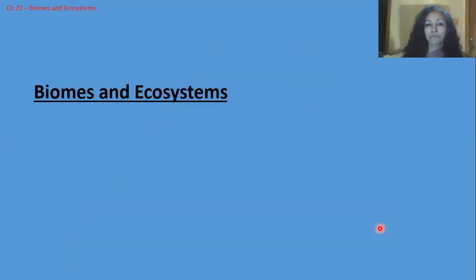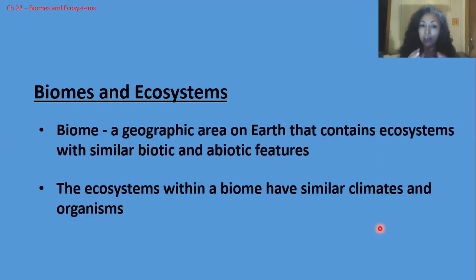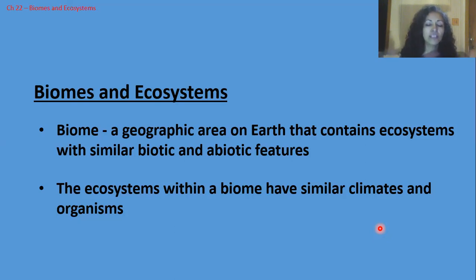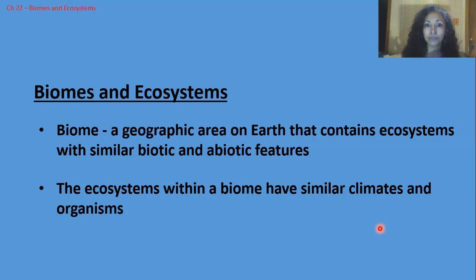Our title is 'Biomes and Ecosystems.' What is a biome? A biome is a geographic area on Earth that contains ecosystems with similar biotic and abiotic features. Different areas on Earth can be classified as the same biome because the ecosystems within them share similar climates and similar organisms. Get those notes down and we'll go into the details.